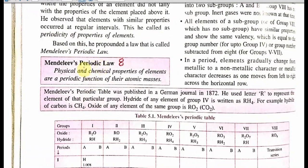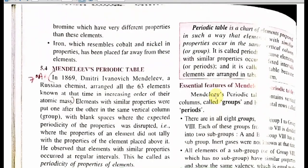Students, please memorize this law: physical and chemical properties of elements are periodic functions of their atomic mass. Mendeleev published two tables. The Mendeleev Periodic Table was published in a German journal in 1872. You will learn about the second table in Class 11 — after 20 years, he published a second table.